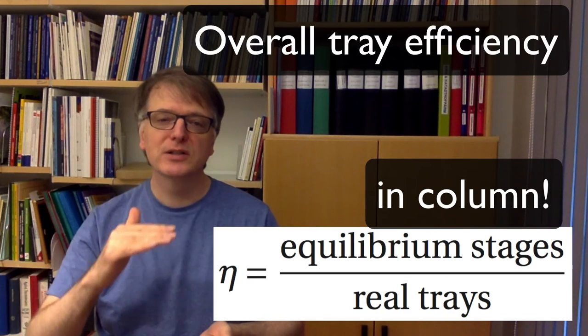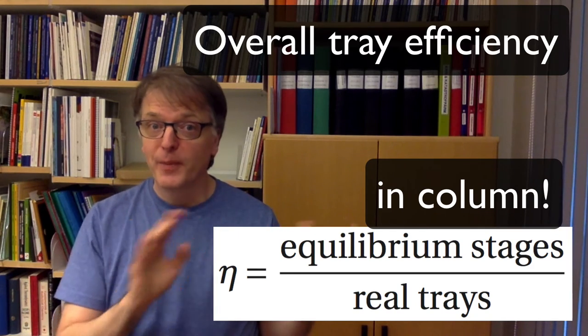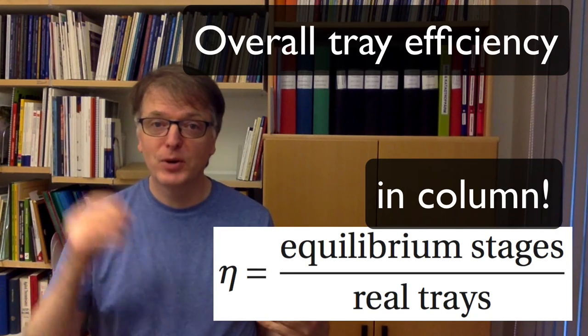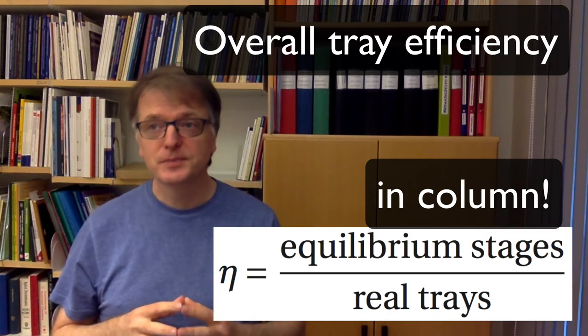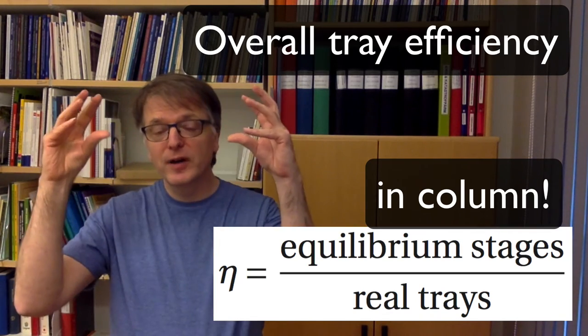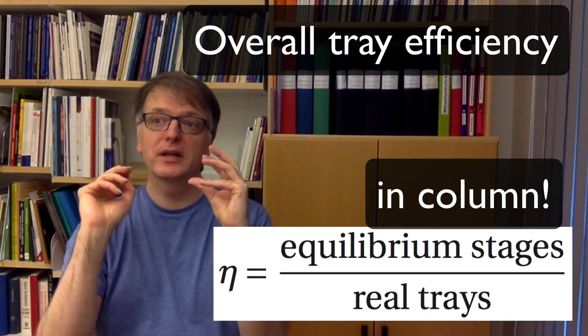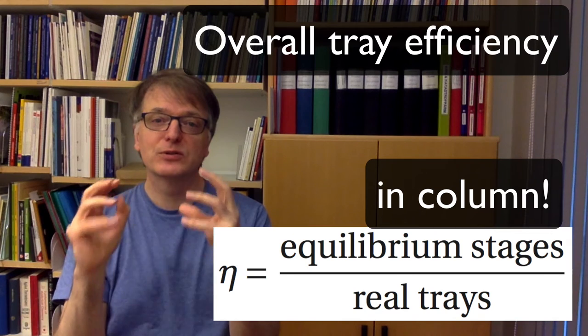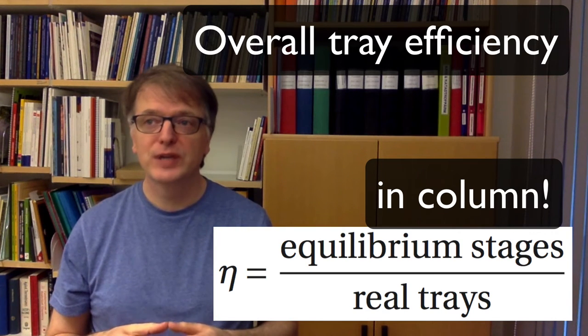In this course we deal with an overall tray efficiency where we count the number of equilibrium stages that we have inside the column. So please take away first partial condenser and reboiler in your McCabe-Thiel graphical solution. And then you divide how many equilibrium stages you have in the column with how many actual physical trays there are and that's the overall tray efficiency.